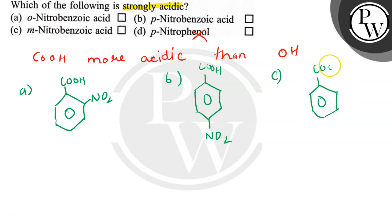COOH and nitrogen group on meta position. This is ortho, this is para, and this is meta. If we see among these, due to the